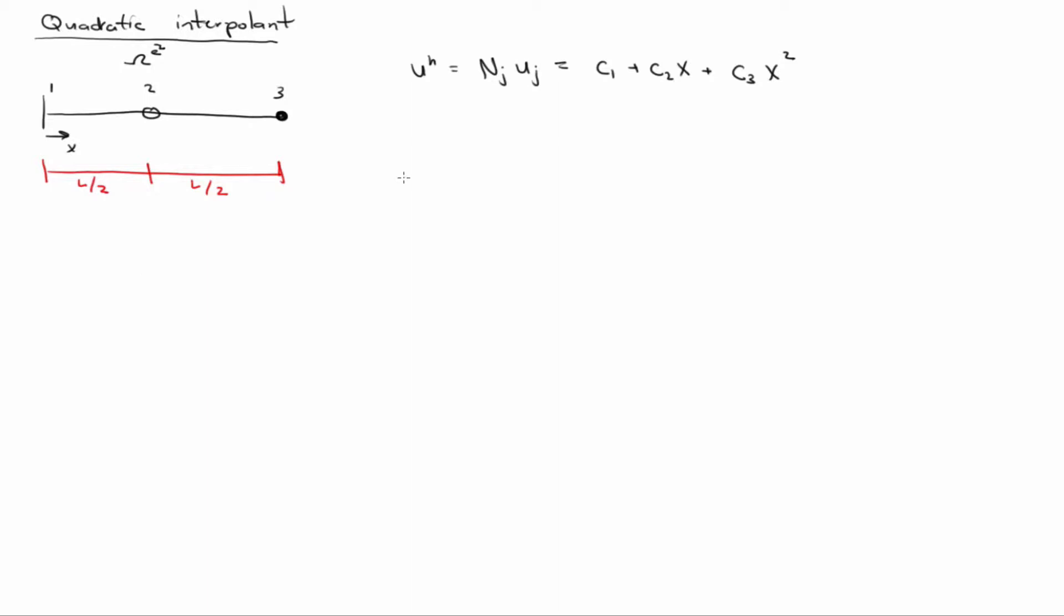And so if I write down those matrix equations directly, I have 1, 0, 0, 1, l over 2, l over 2 squared. And again, in matrix form, this would be u, a, c.